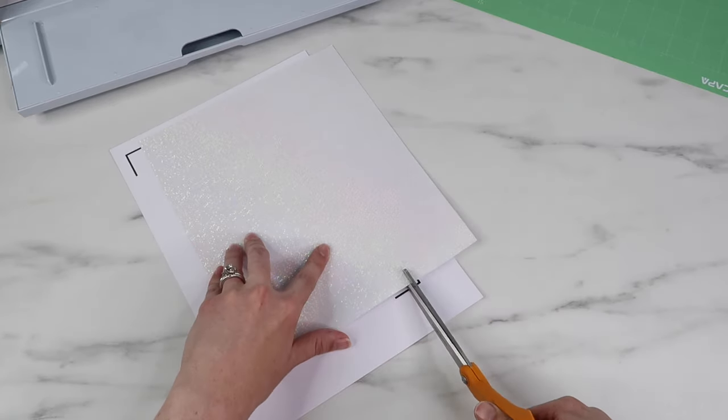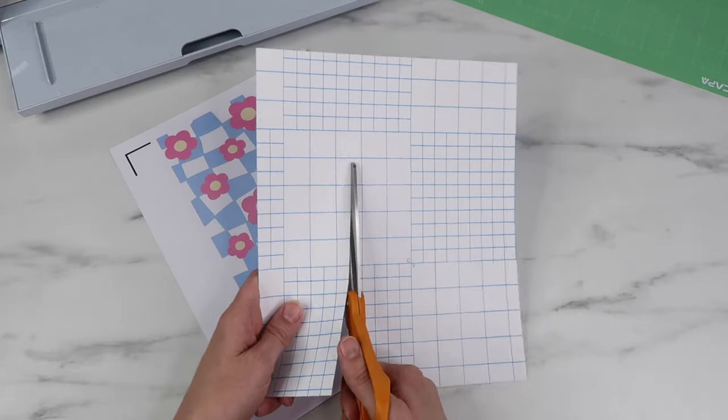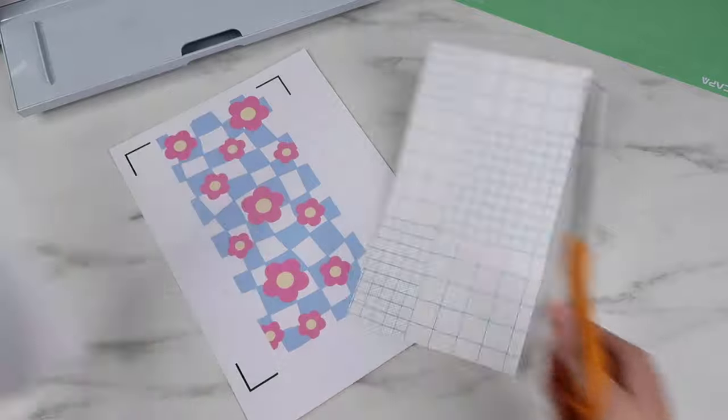These lines on the back are super nice because it makes it a lot easier to cut it. You can also use a paper trimmer as well.